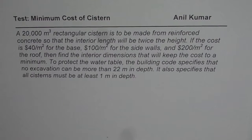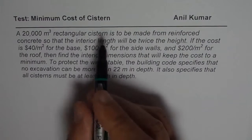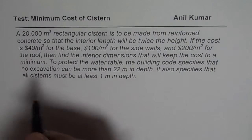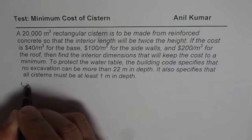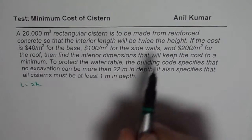I am Anil Kumar. We are trying to solve some questions on optimization. Here is a very interesting one. A 20,000 meter cube rectangular cistern is to be made from reinforced concrete so that the interior length will be twice the height. So we say length is twice the height. Length is 2 times height and volume is 20,000.